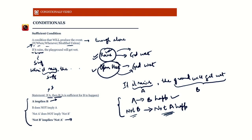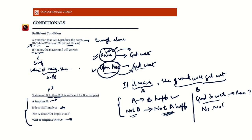Now look at the other two implications. If I come back and see that the ground is wet, can I say it must have rained? No — a sufficient condition is enough to cause the ground to be wet, but it doesn't mean it is the only cause. If someone opened a hose, the ground would also be wet. So seeing that the ground is wet does not necessarily mean it rained. Therefore, B does not imply A.